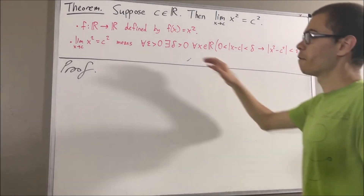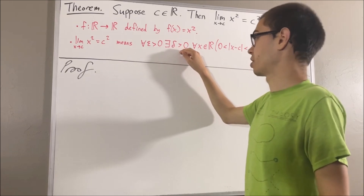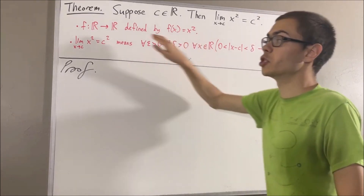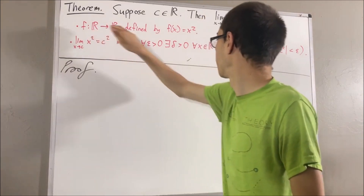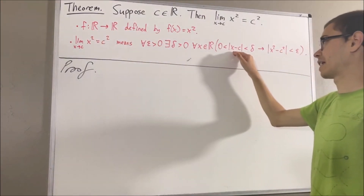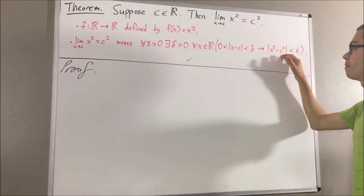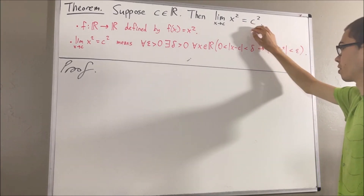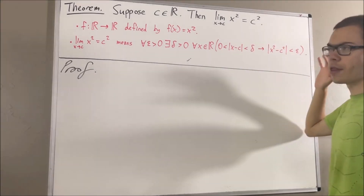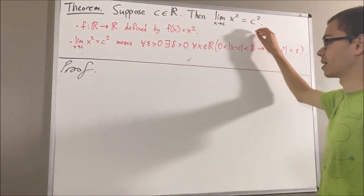It means for every epsilon greater than zero, there exists a delta greater than zero, such that for all real numbers x in the domain of our function, if zero is less than absolute value of x minus c is less than delta, then the absolute value of x squared minus c squared is less than epsilon.